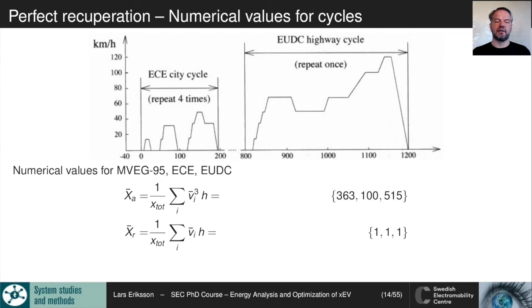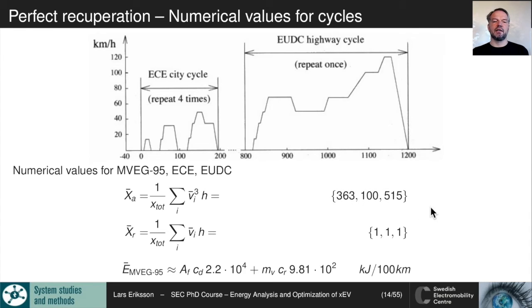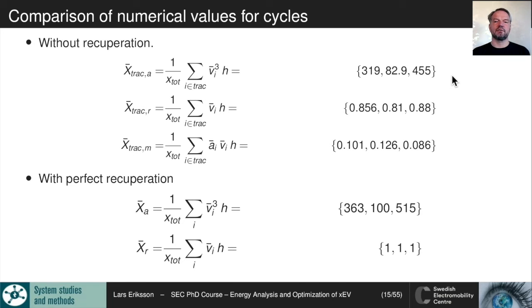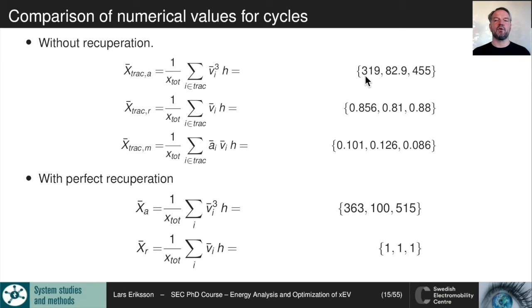For perfect recuperation, the rolling resistance must account for the full distance, and we can write the equation with mass and cross-section area terms. Without recuperation we have higher numbers; with perfect recuperation the mass effect from acceleration is gone while rolling resistance takes the full area. In the conventional vehicle without regenerative braking, stored kinetic energy helps overcome some rolling resistance and air drag during deceleration, so those terms were smaller before.